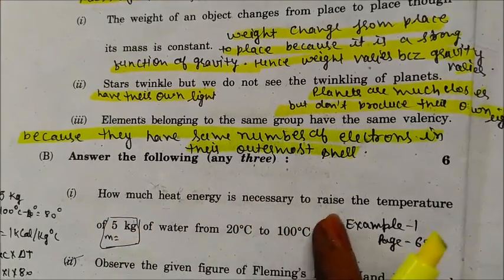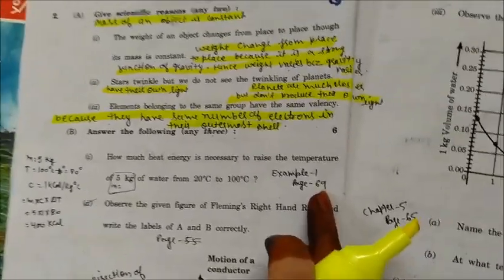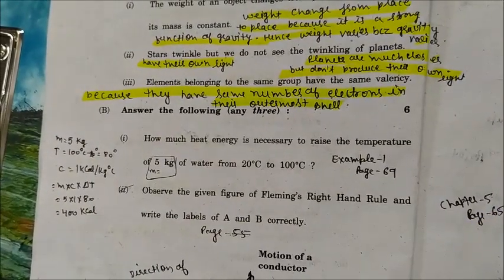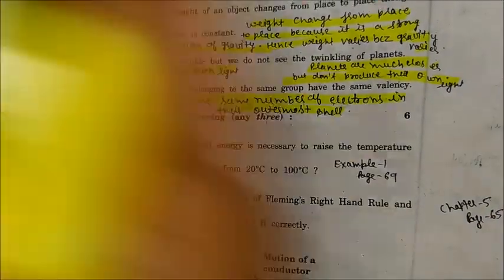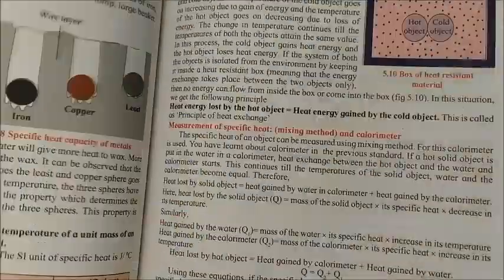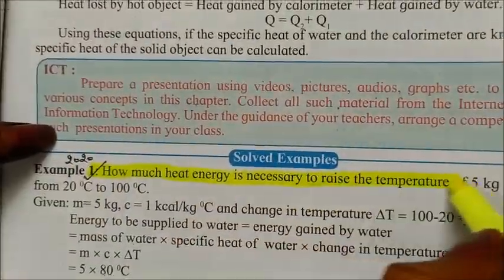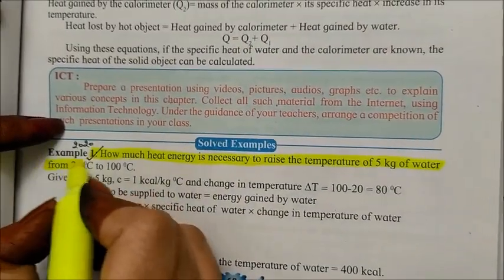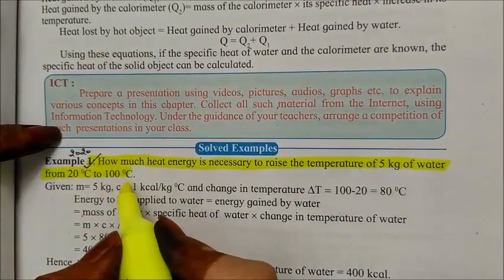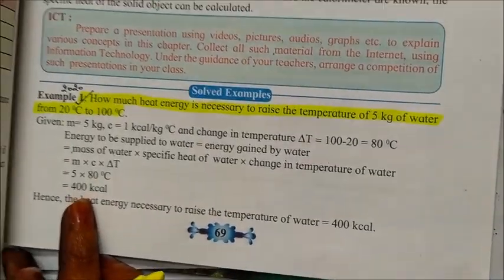Part B: how much heat energy is necessary to raise the temperature of 5 kg of water from 20°C to 100°C? This example has been taken from page number 69 of your textbook. The answer is 400 kcal.